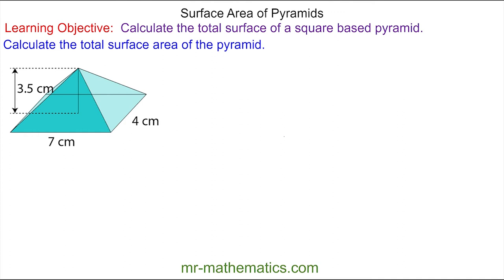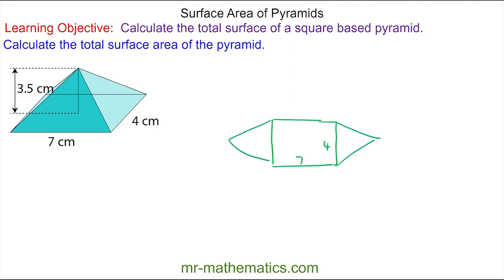So again we begin with the net, and we have a rectangle in the middle which is seven by four. We have two triangles on the edge, and these two triangles are congruent, and we've got two different triangles on top but these are also congruent.